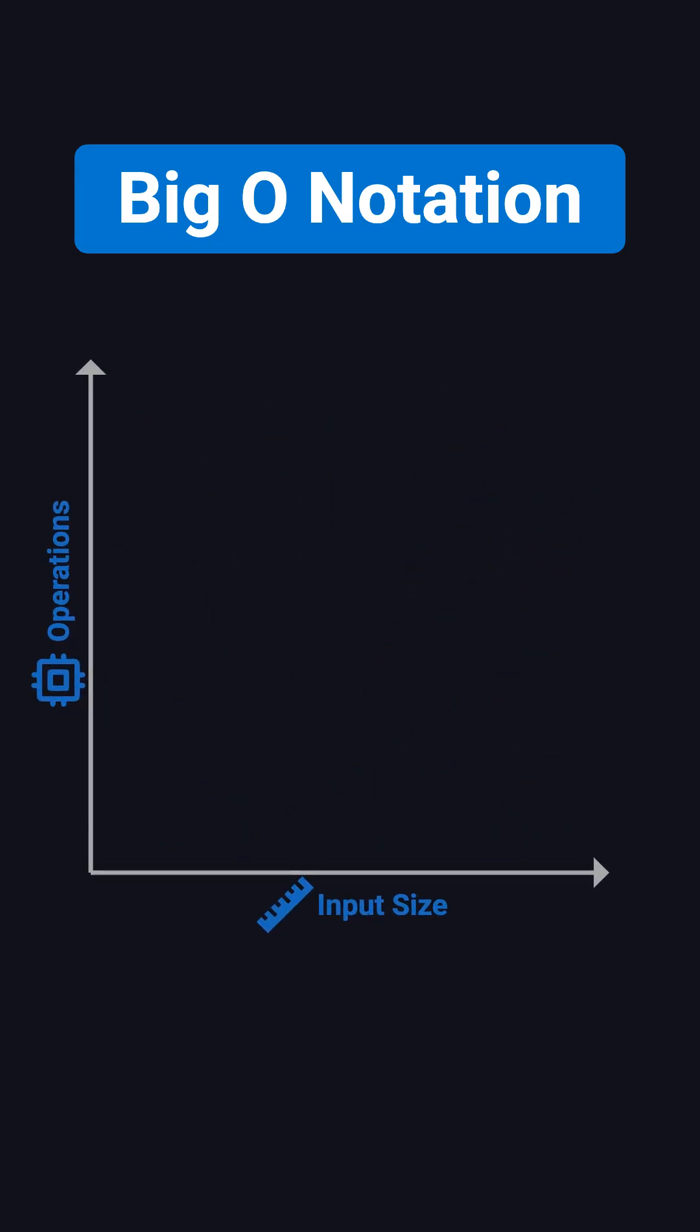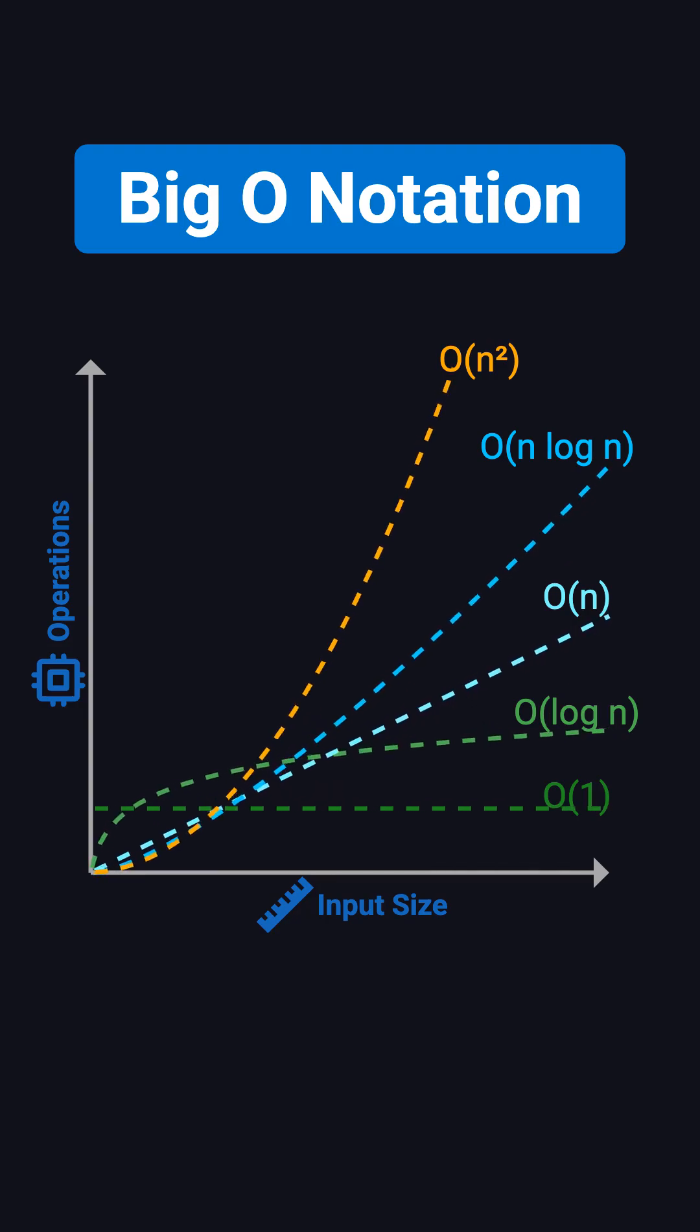Common complexity classes include constant time O of 1, logarithmic time O of log n, linear time O of n, linearithmic time O of n log n, quadratic time O of n squared, and even exponential time O of 2 to the n, which grow explosively. The difference in their growth rates is huge.